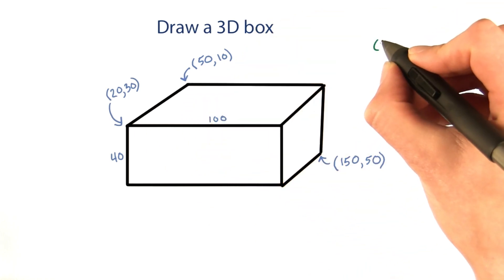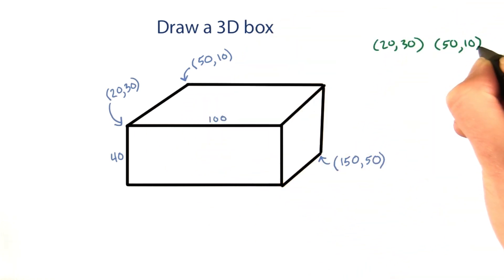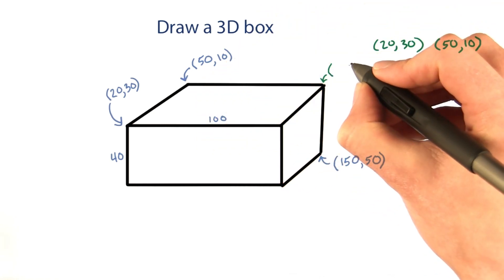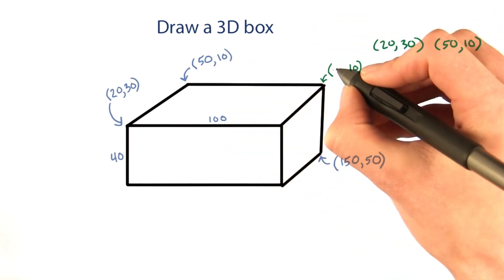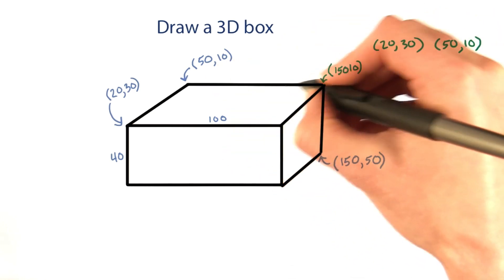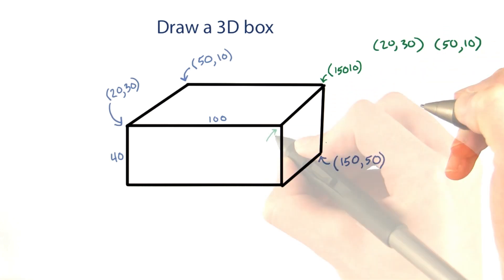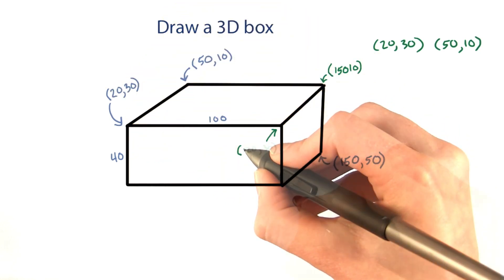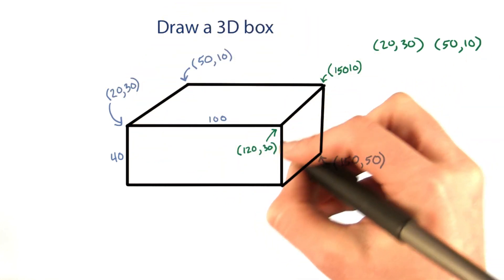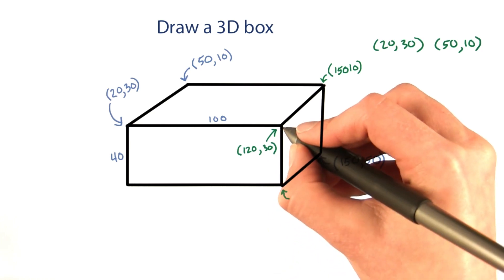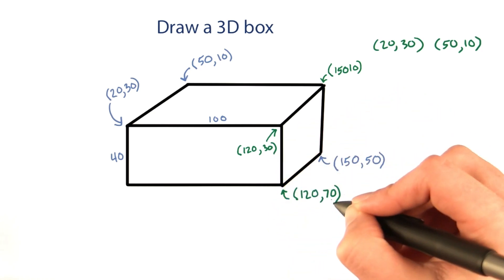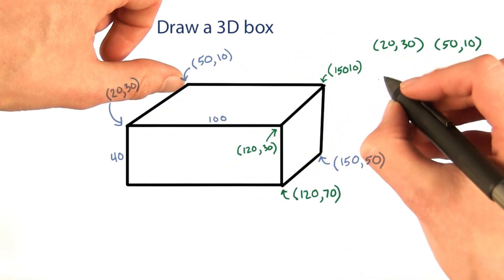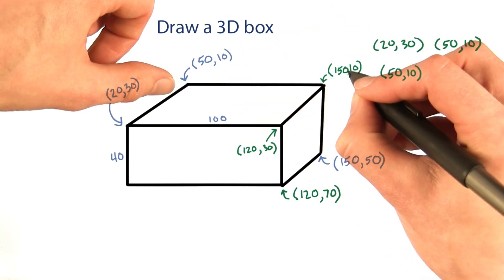This line's pretty easy — it goes from 20, 30 to 50, 10. This one's a little bit trickier. This point is at the same height as that one, so it's at 10, and it's 100 to the right from 50. That means its x value is matching up with this one, so that looks good. This point is 100 over from this one, so 100 plus 20, which gives us 120, 30. And this point is 40 down from this one, so 120 and 70. So we've got that first line. Now the second one is from 50, 10 to 150, 10.